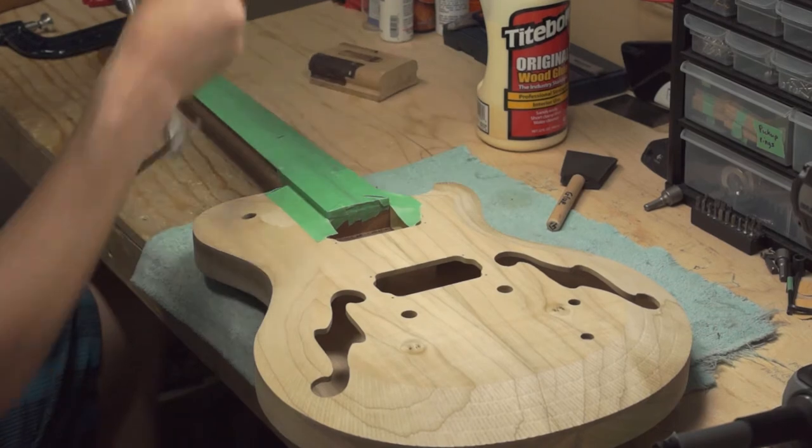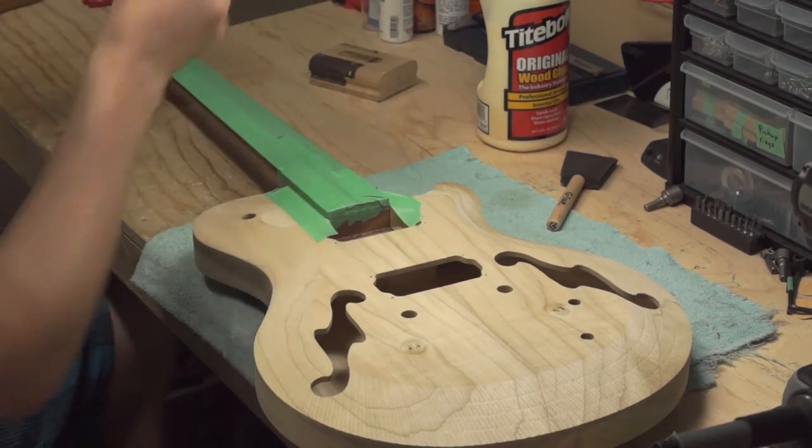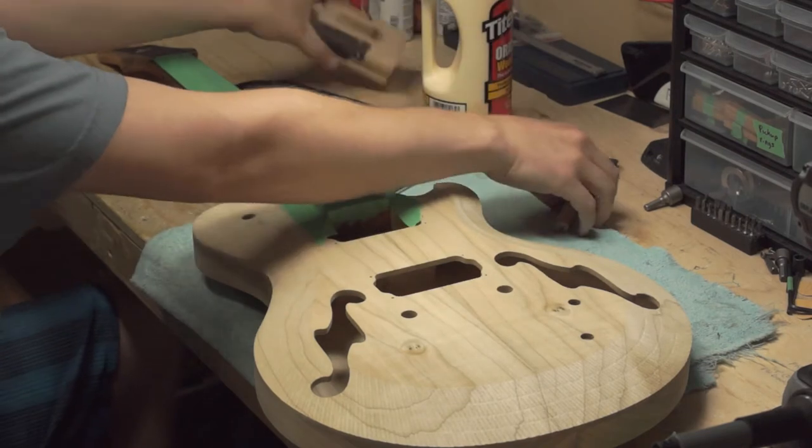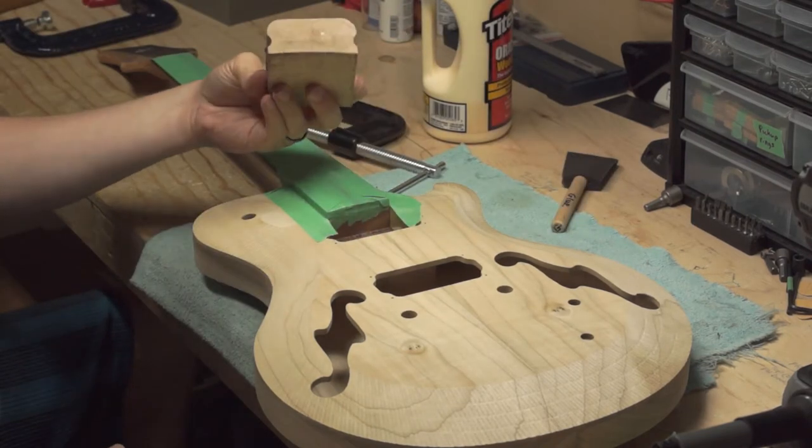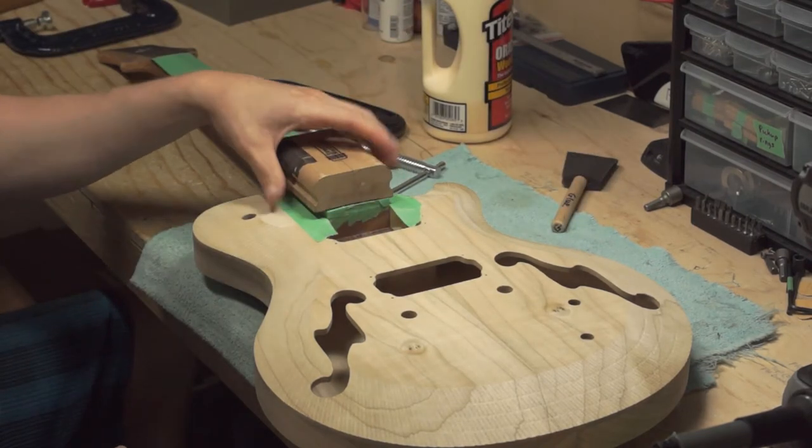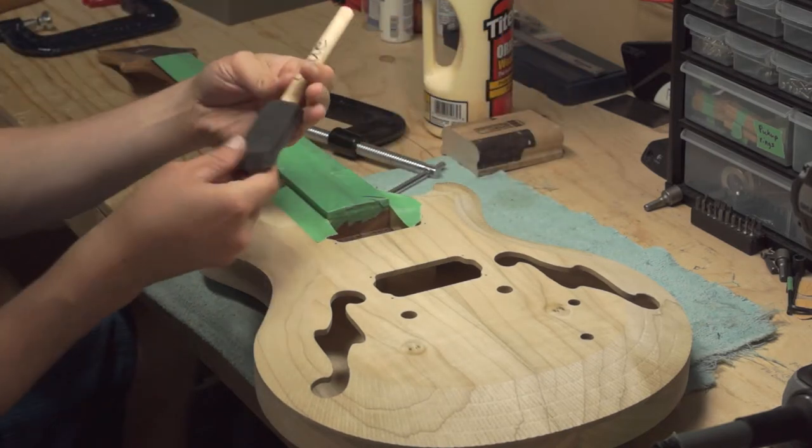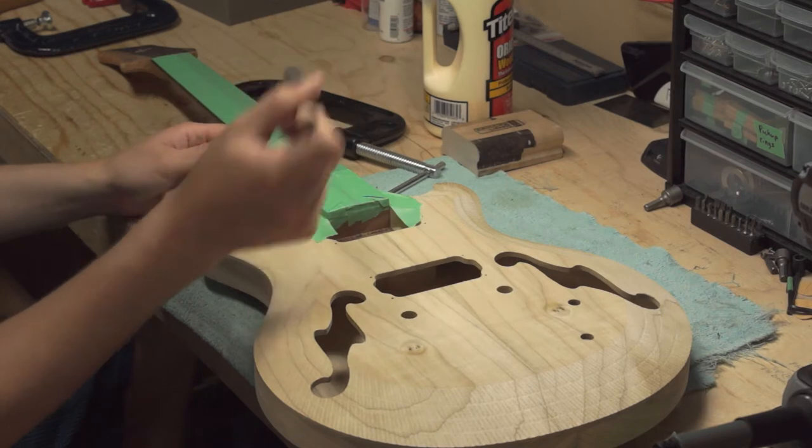For the glue up I have two big C clamps. I have the glue, I have a little radius block to protect the fingerboard when I'm clamping and I just have a brush to put the glue in.